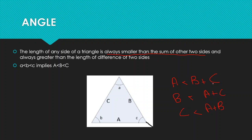The third side will always be smaller than the sum of the other two sides and always greater than the difference of those two sides. So the length of any side of a triangle will always be greater than the difference of the lengths of the other two sides, which means a must be greater than b minus c.